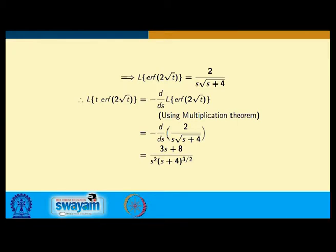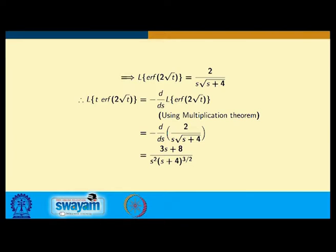Furthermore, the Laplace transform of t · erf(2√t) equals −d/ds of L{erf(2√t)} = −d/ds [2 / (s·√(s+4))]. Evaluating this differentiation gives the result (3s + 8) / [s² · (s+4)^(3/2)].